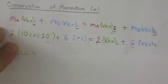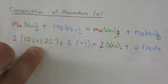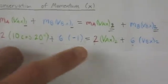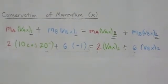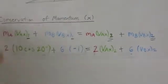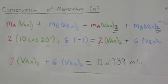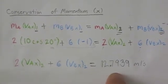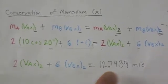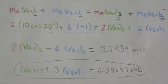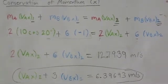Substituting the numbers: 2 kilograms times 10 cosine of 20 degrees — from the geometry — plus 6 times negative 1, because B is moving in the opposite x direction, set equal to 2 times the final velocity in x for A, plus 6 times the final velocity in x for B. This gives us 2·vAx_final + 6·vBx_final = 12.7939 m/s. Dividing both sides by 2, we get vAx_final + 3·vBx_final = 6.39693 m/s.